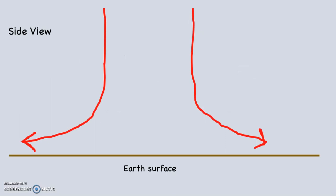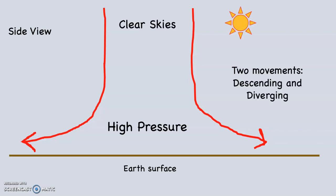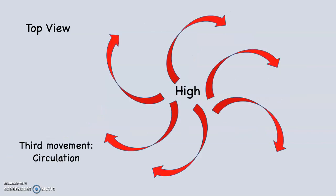Looking at the diagram — again a view across the surface of the planet — the red arrows show the air descending from aloft, and as it comes down towards the surface it diverges, exactly as shown. That is a hallmark of high pressure. High pressure is associated with clear skies — you can see the sun there. We have two movements so far: descending and diverging. The third is circulation. In the Northern Hemisphere, if you were up in space, you'd see the air circulating clockwise and out — the arrowheads point away from the high.